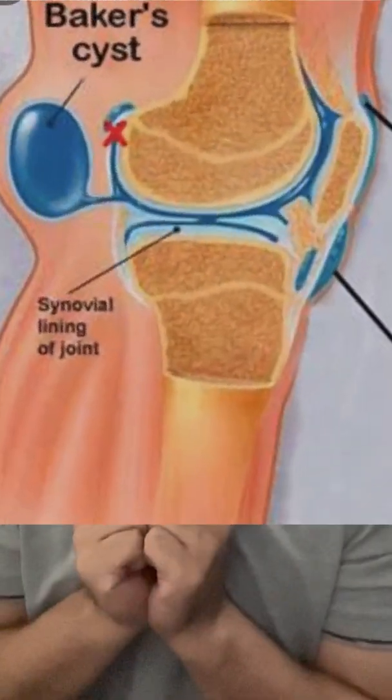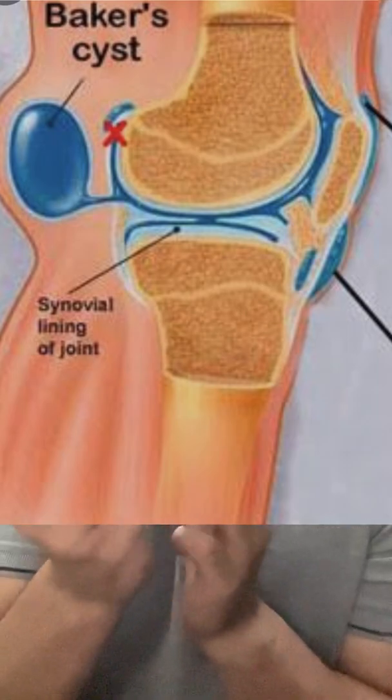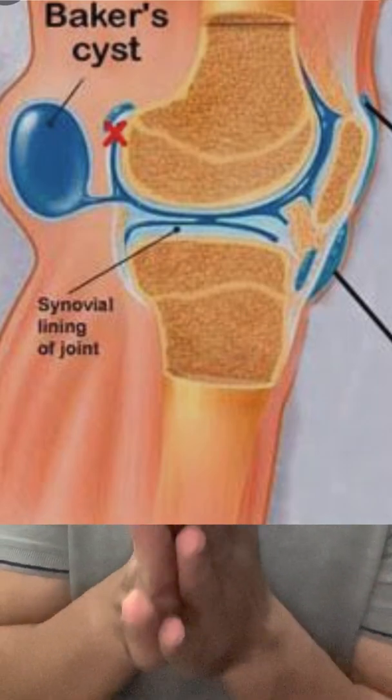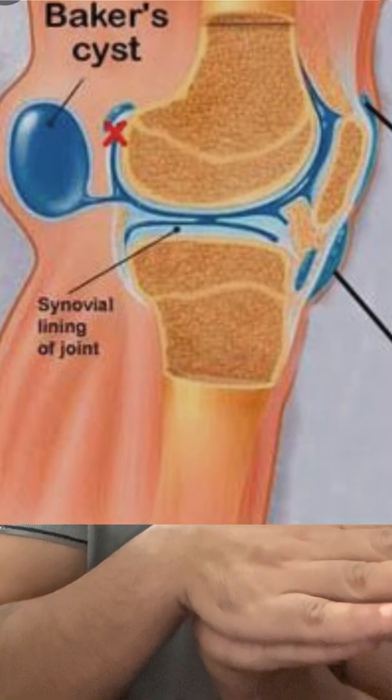The parameniscal cyst occurring outside the joint capsule is known as the Baker's cyst, and it lies outside the capsule.